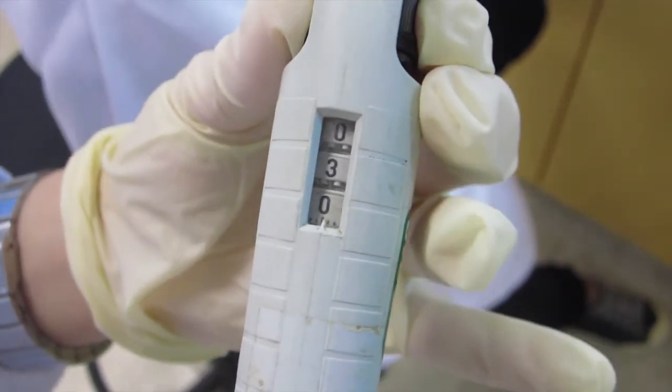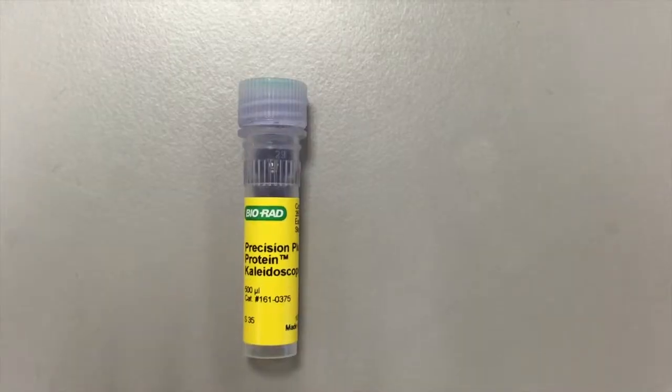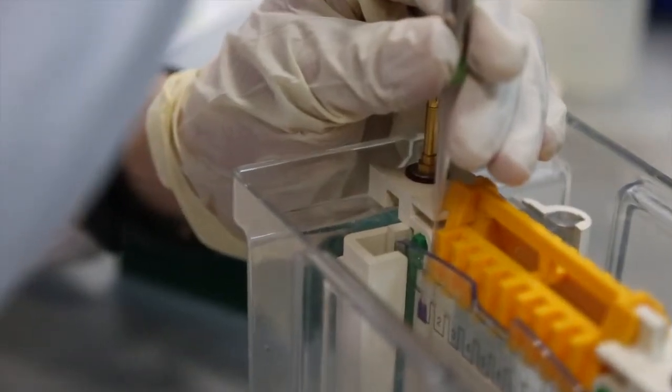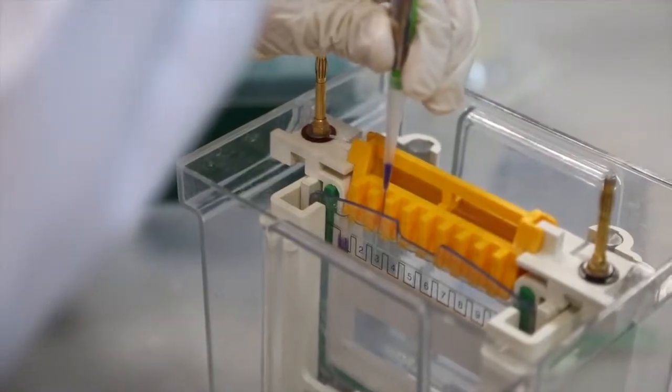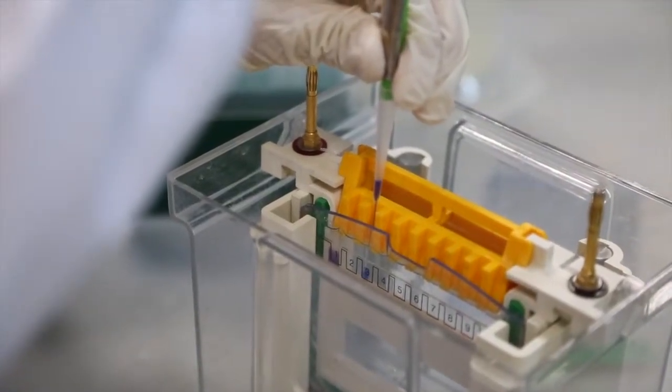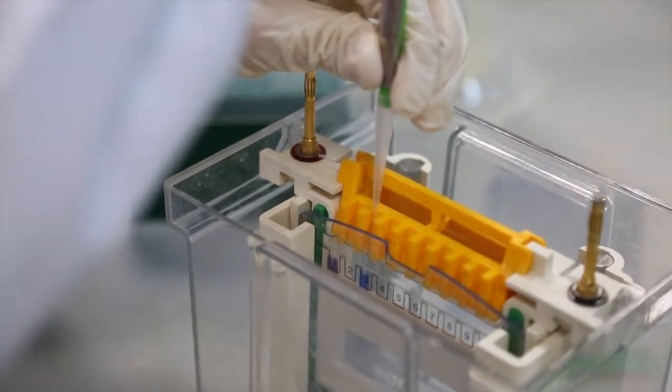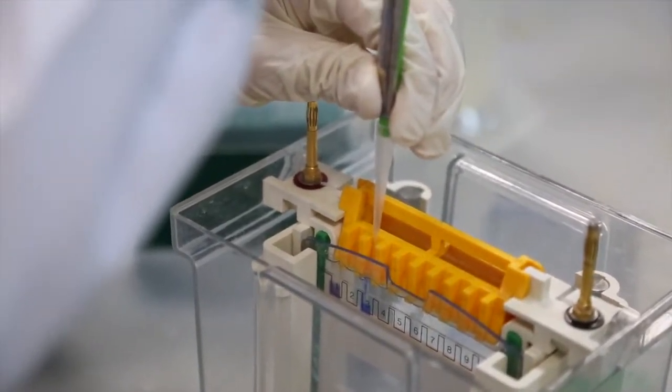To prepare for the electrophoresis analysis of the protein sample, first adjust the micropipette to 30 microliters and load the same volume of kaleidoscope protein standards into the first well. Then load the sample solution prepared earlier into the remaining 8 wells with a space between the first and the third.